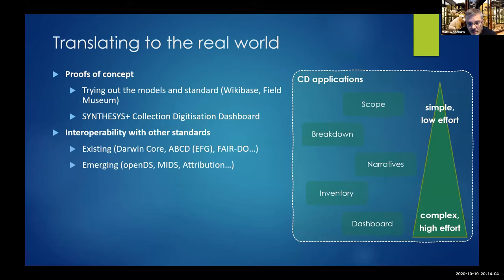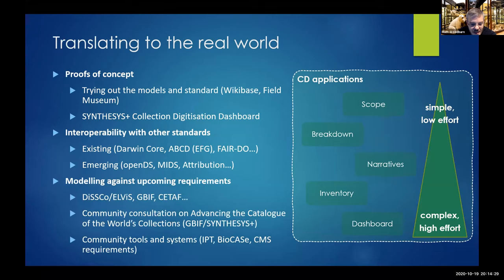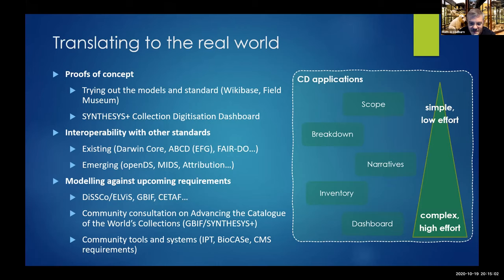We're also looking at greater collaboration with other data standards — Darwin Core, ABCD, OpenDS (open digital specimen), and MIDS (minimum information for a digital specimen). There's also relevant work in the TDWG attribution group. Specific community initiatives we need to support include DISCO, GBIF, DiSSCo, and outcomes of the global consultation on advancing the catalogue of the world's collections. We also need to look at practical adoption by tools such as the Integrated Publishing Toolkit (IPT) and the Biocase provider software.